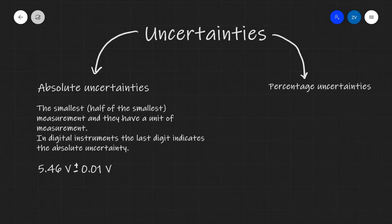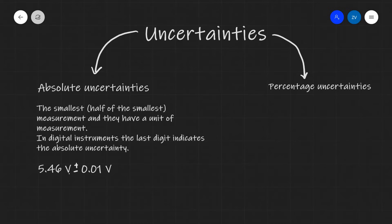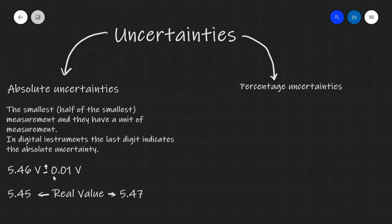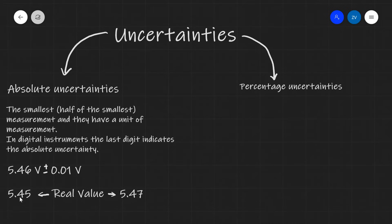In digital instruments, however, the last digit always indicates the absolute uncertainty. For instance, if I had a voltmeter with the following reading, 5.46 volts, I cannot really trust the last digit, as it can be 5.47 or 5.45. So in this case, we are confident that the real value is sandwiched between 5.45 volts and 5.47 volts.